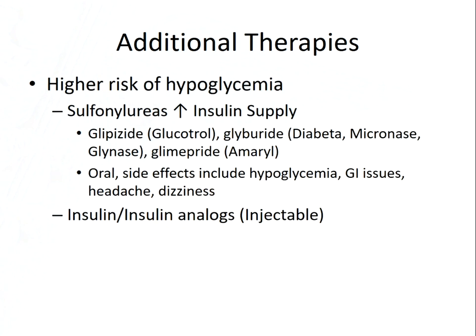If we have tried metformin, lifestyle changes, and some of these other drugs and still haven't had an effect, there are additional categories of drugs we can use. Sulfonylureas are some of the earlier drugs — glipizide and glyburide are second-generation sulfonylureas. The big risk here is hypoglycemia, which can be deadly. The second-generation are more potent, so we can use a smaller amount and hopefully decrease the risk of hypoglycemia. These are oral drugs, relatively cheap, so if cost is an issue they might be used. There are some GI issues and headache and dizziness.